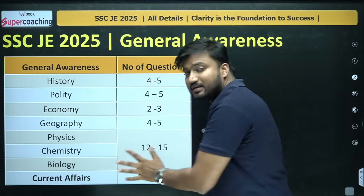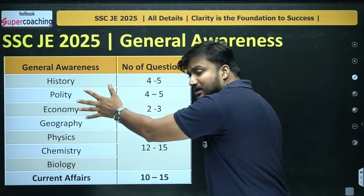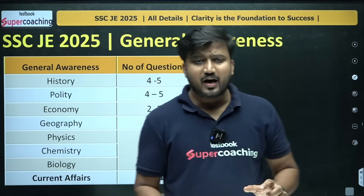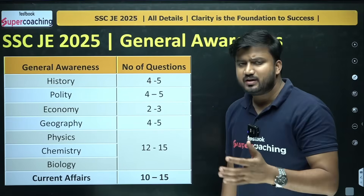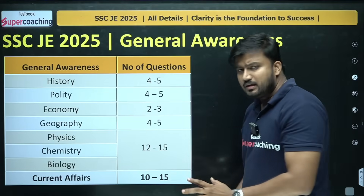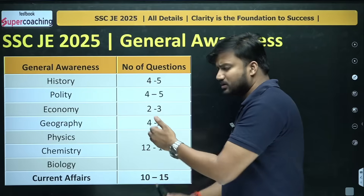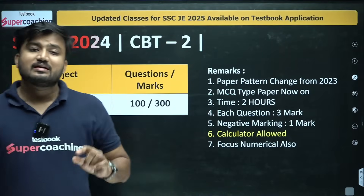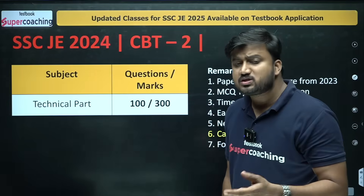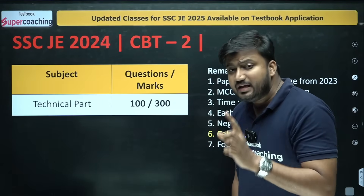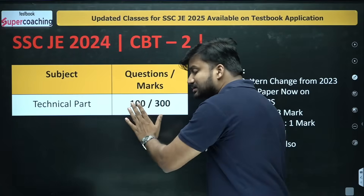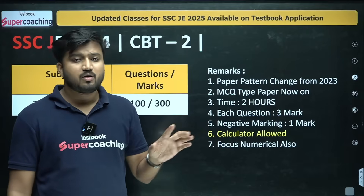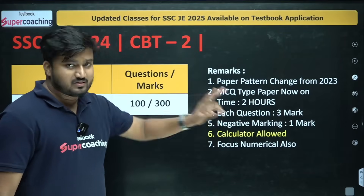General Awareness in CBT-1 consists of several subjects: History, Polity, Economy, Geography, Physics, Chemistry, Biology, and Current Affairs — it looks like one subject but covers many areas including General Science and Current Affairs. For CBT-2, it consists only of technical questions from your branch. Each question carries three marks, so 100 questions amount to 300 marks total. A virtual calculator will be provided on screen, and the duration is two hours.